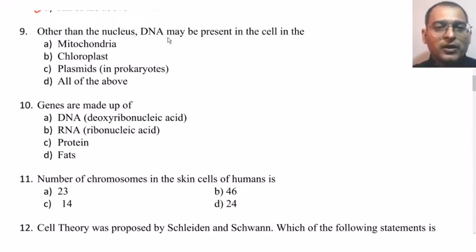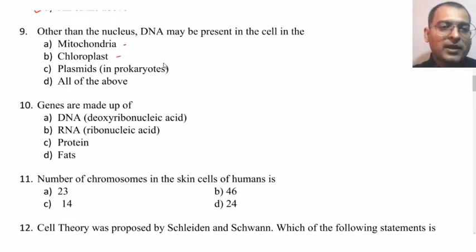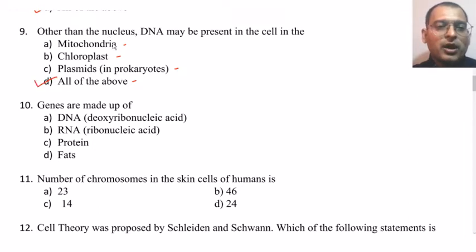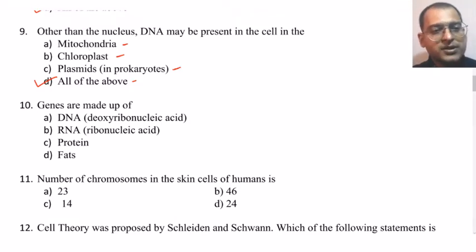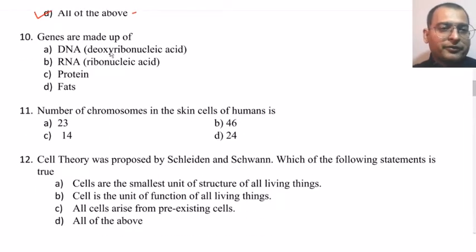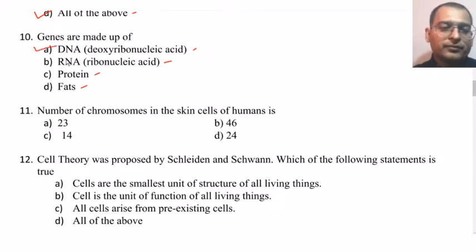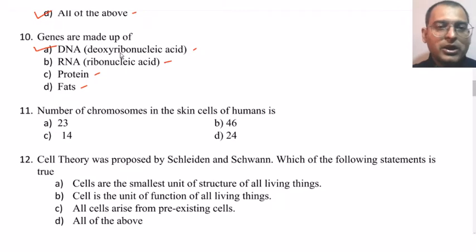Other than the nucleus, DNA may be present in mitochondria, chloroplast, and plasmids as in prokaryotes — so the answer is all of the above. DNA is present in the nucleus but can also be found in mitochondria, chloroplast, and plasmids. Genes are made up of DNA, that is deoxyribonucleic acid.